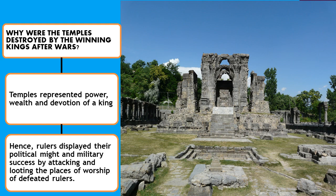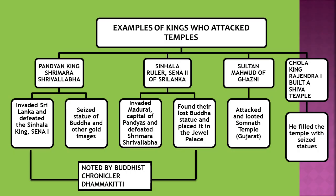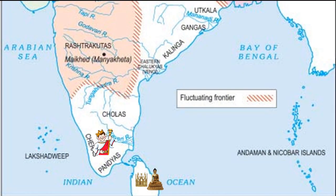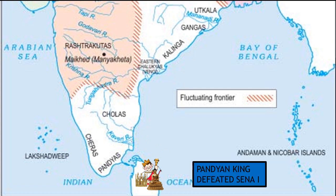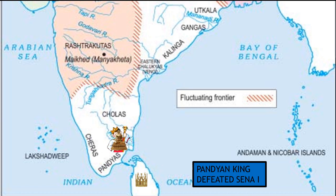They even used to plunder all the wealth that kings used to hide in their temples. Now let's discuss examples. First, the Pandyan king Srimara Shrivalabha invaded Sri Lanka, defeated the Sri Lankan king Sena I, and seized lots of valuables. A very important item was a gold statue of Buddha, which he took back to India.